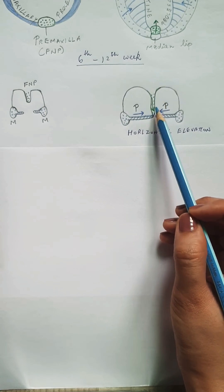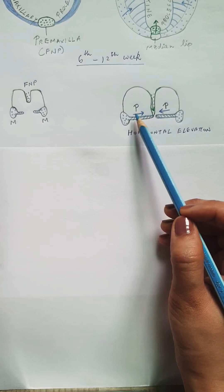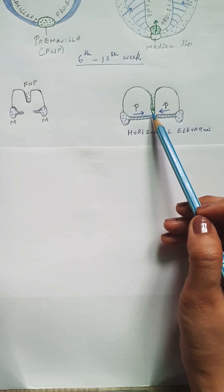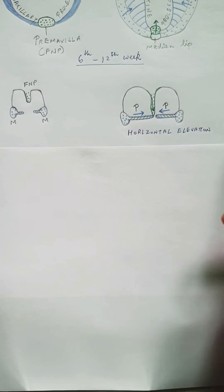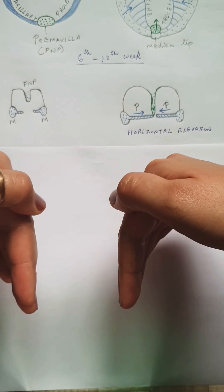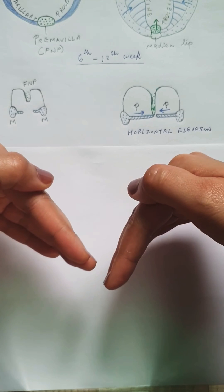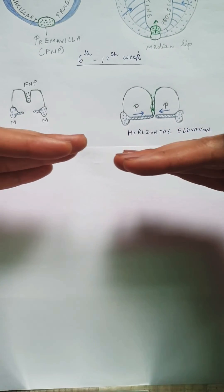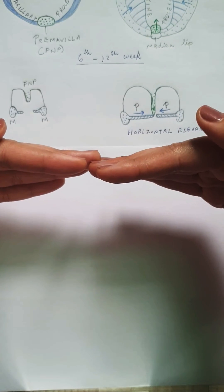At this point, all three processes combine to form the palate. Another important point to remember is that initially the palatine processes are oriented longitudinally downward, and then they elevate to form horizontal shelves, which will unite with each other and lead to formation of the palate.